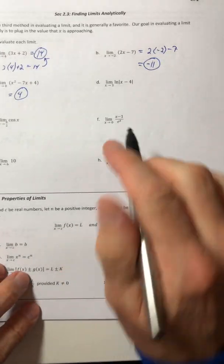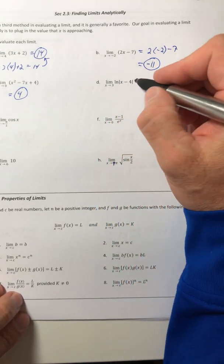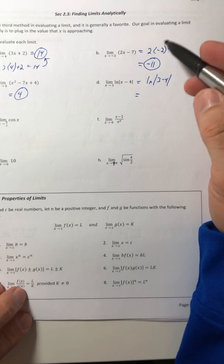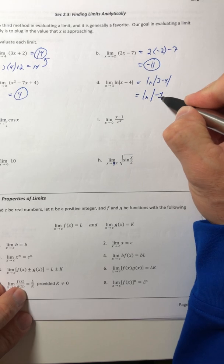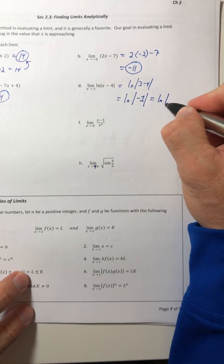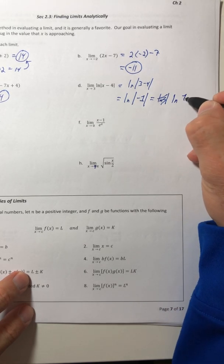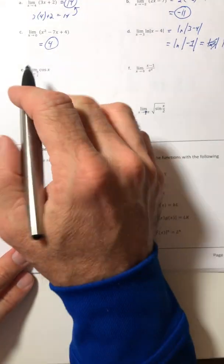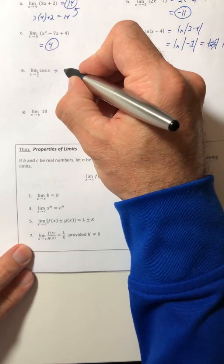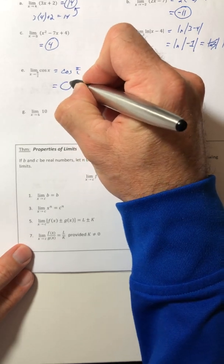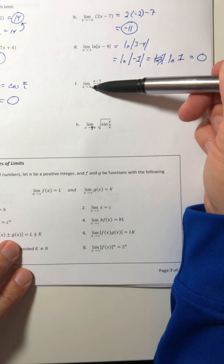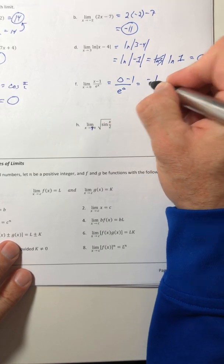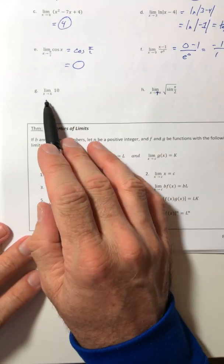Part d — there's an ln and an absolute value. No fear — just substitute. The absolute value of negative one is one, and the natural log of one is zero. Part e — moving on to trig functions: plug in pi over two for x, and cosine of pi over two is zero. Part f — plug in zero for x: you get zero over zero minus one over e to the zero, so you have negative one over one, which is negative one.